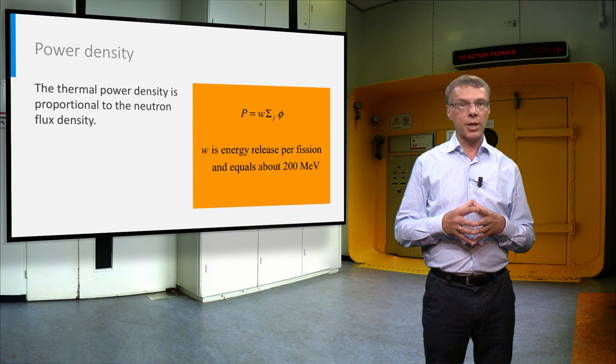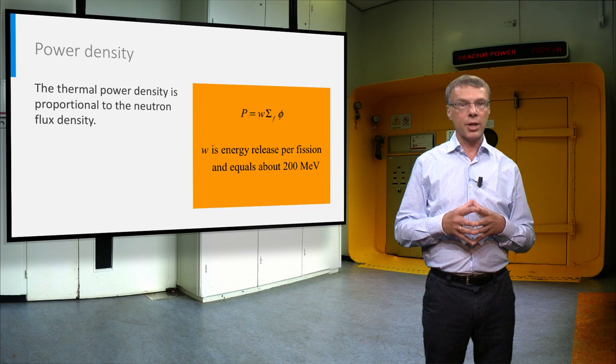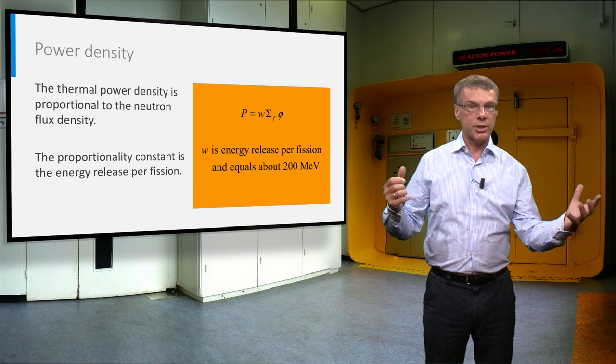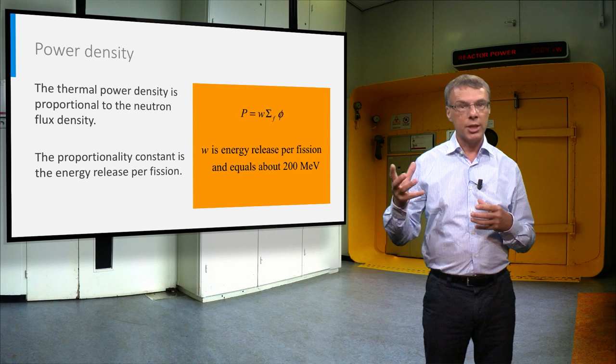From the neutron flux density we can calculate the power density in a reactor core. There is a simple relationship between the neutron flux density and the power density by first calculating the fission reaction rate and multiplying this with the energy release per fission.